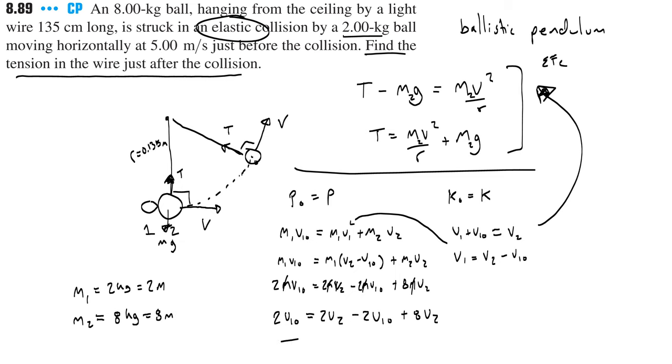So I get 2 v1 not equals 2 v2 minus 2 v1 not plus 8 v2. I have this equation and I need to simplify it more. We can combine terms: when I add this to the right I get 4 v1 not and then 10 v2, so therefore v2 equals 4 over 10 times v1 not, or 4 over 10 times 5 meters per second.